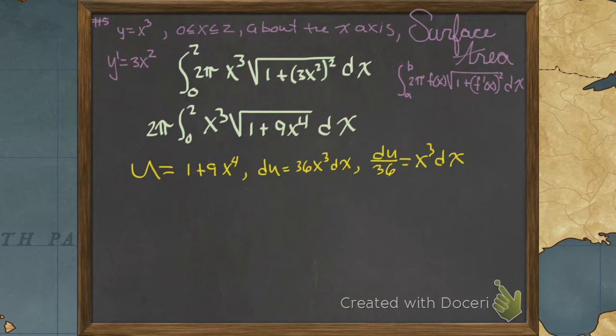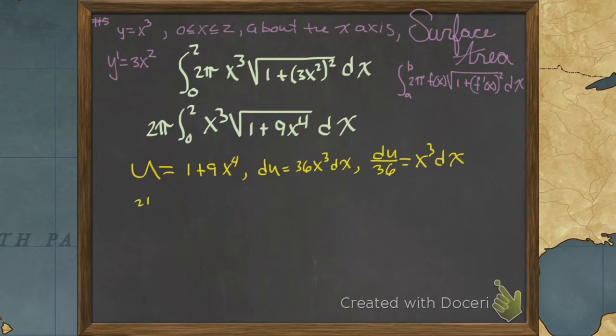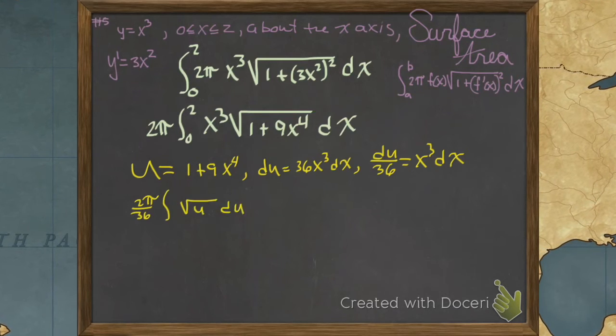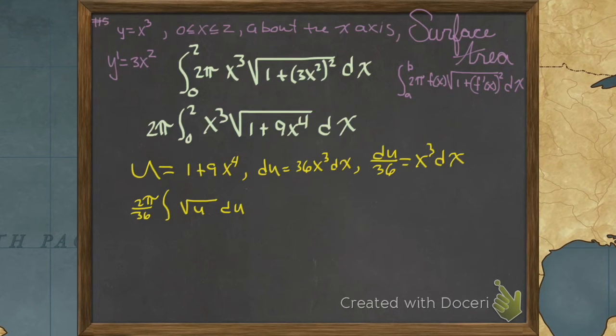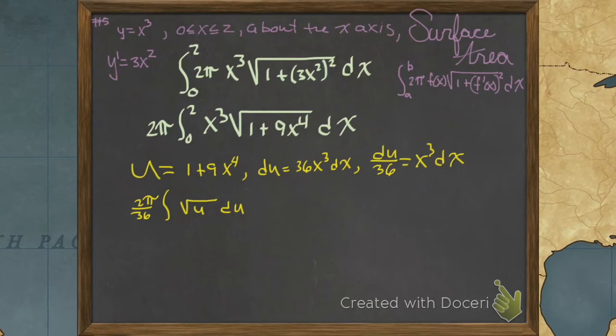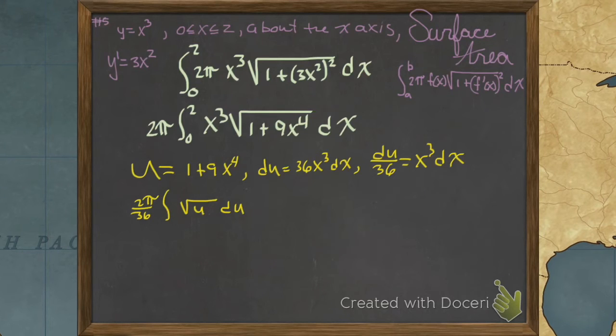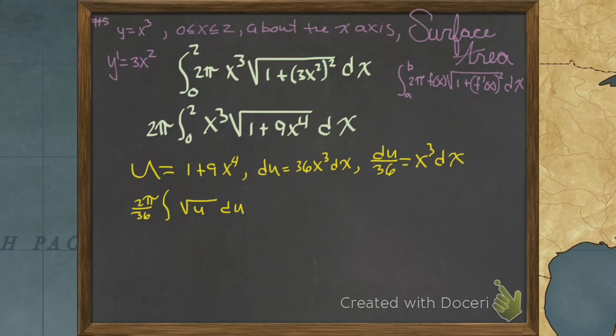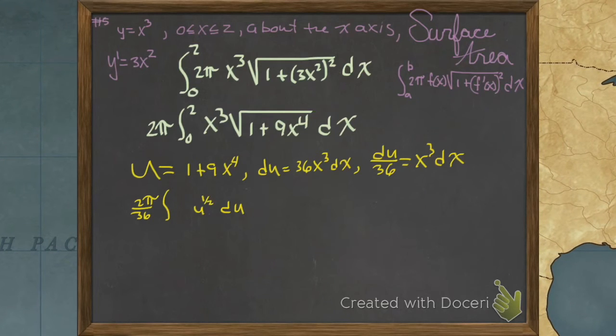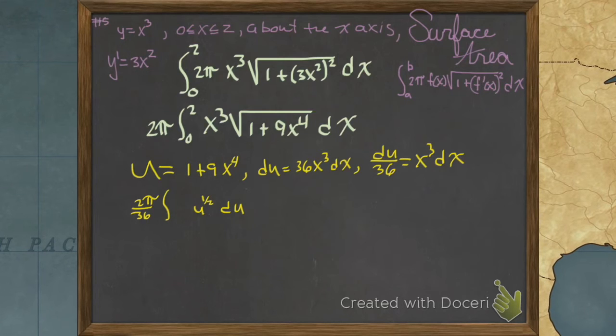We go ahead and sub that in there. That's 2 pi over 36 times the square root of u. I left my limits off because anytime we have to do work, do it later. I'll remind you that that's u to the 1 half.